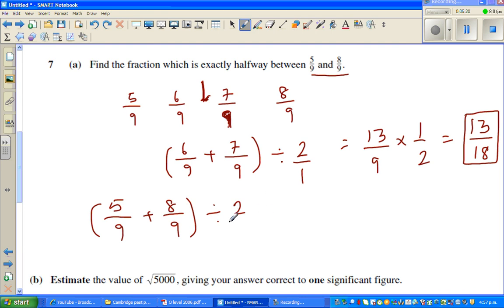Which is 13/9 times 1/2. 8 plus 5 is 13, so that is 13 out of 18. This is also a different way of doing it, but both will give you the same answer.